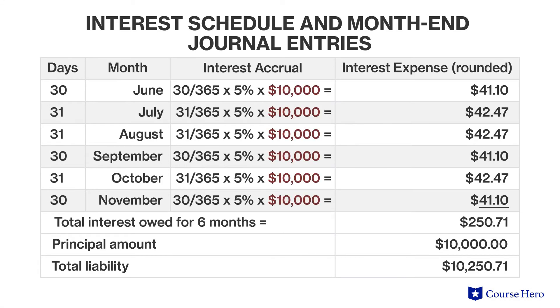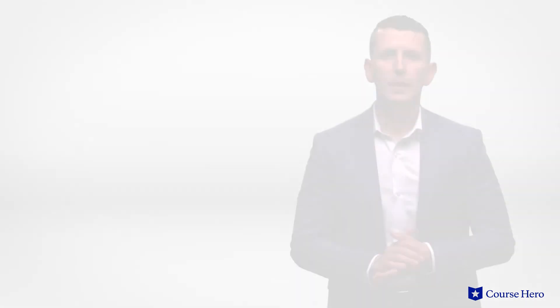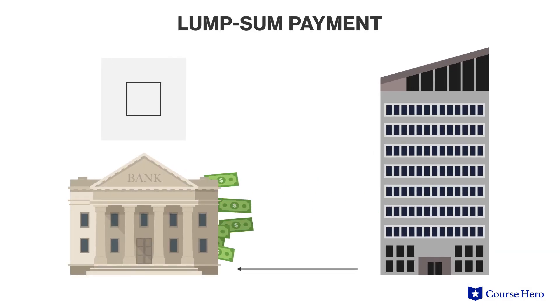Suppose that J Company borrows $10,000 from State Bank on June 1st for six months at an annual interest rate of 5%. This is a short-term note payable because it is only a six-month loan. According to the terms of the note payable, J Company will pay back the principal plus interest at the end of the six months. Each month, J Company must calculate the accrued interest and capitalize it, which means add it to the principal of the loan. At the end of the six-month period, a lump sum payment including principal and interest will then extinguish the note.